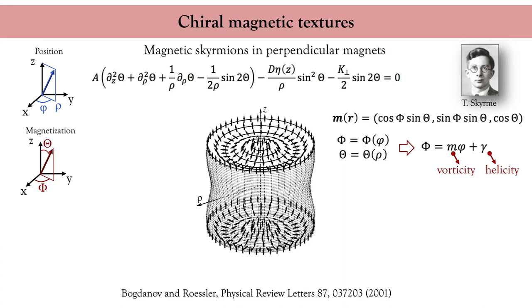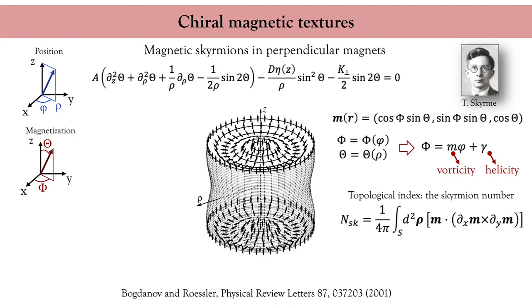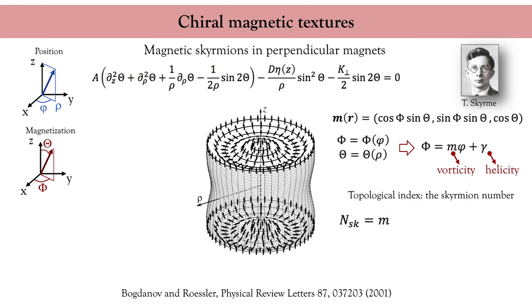This topological number, also called the skyrmion number, is defined as the integral of the solid angle spanned by the magnetization vector. By considering the symmetry properties of the skyrmion, this integral reduces to an expression showing that the skyrmion number is simply equal to the vorticity. This number does not depend on the exchange, the Dzyaloshinskii-Moriya interaction, or even the particular profile of the interaction — it is an integer that characterizes its topology but not its peculiar geometry.